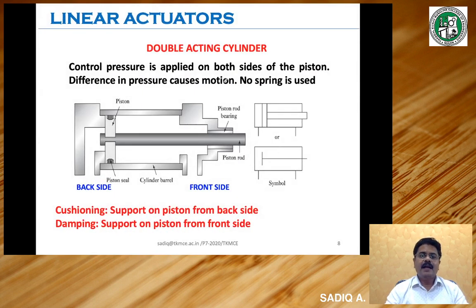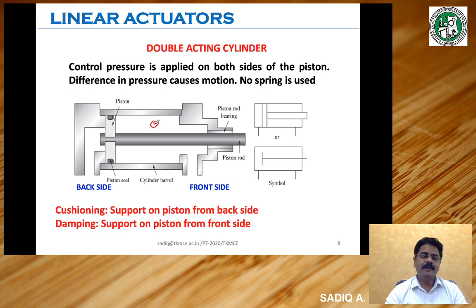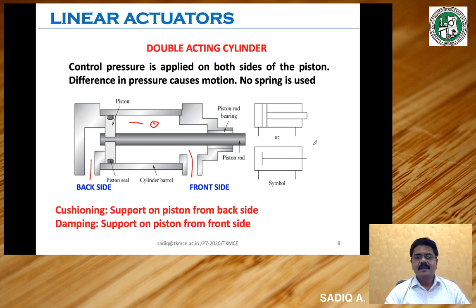In a double acting cylinder, control pressure is applied on both sides of the piston, and the difference in pressure causes motion. No spring is used because to-and-fro movements are done by control pressure. In the schematic diagram, the back side and front side are visible. When control pressure comes from one side, it pushes the piston against the fluid pressure on the other side. To-and-fro movements are possible by pressure supply from either side. The notation for a double acting cylinder shows a rectangular cylinder with two lines on either side of the piston.